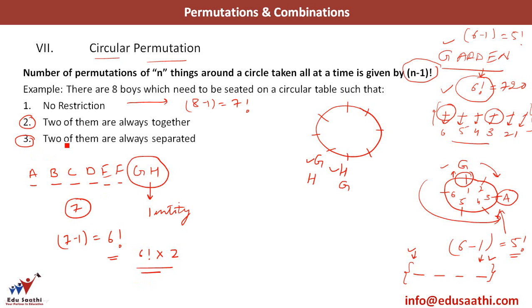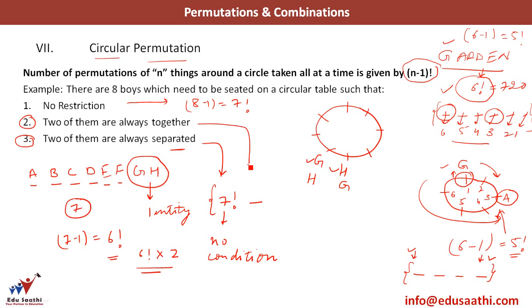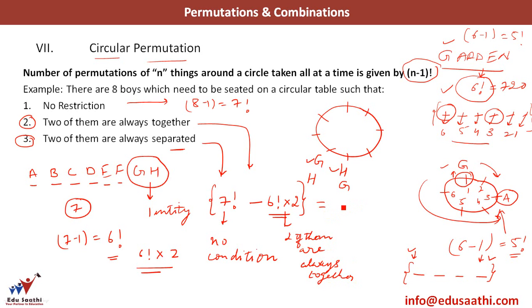For the third case — two of them are always separated — this is the total number of ways with no condition, which is 7 factorial, minus the number of ways where they are always together, which is 6 factorial multiplied by 2. Subtracting gives the number of cases when they are always separated. The third answer is the first case minus the second case.